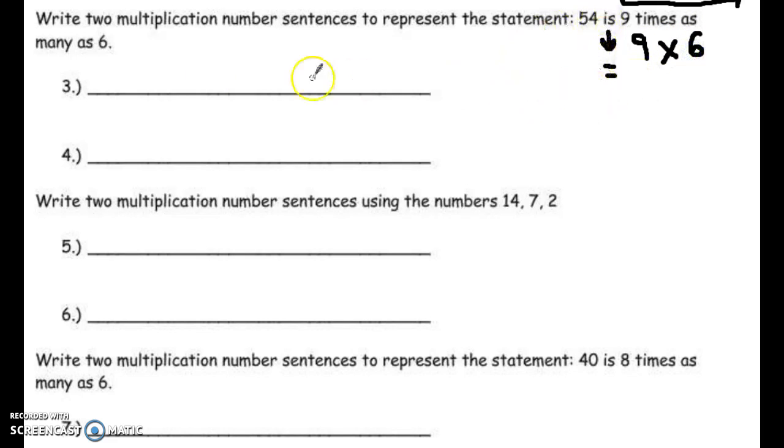So really, the answer is right there in the wording of this question. 54 is or equals 9 times as many as 6 or 9 times 6. 9 groups of 6 or 6 groups of 9, which means you could also say 54 is equal to 6 times 9.